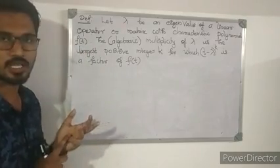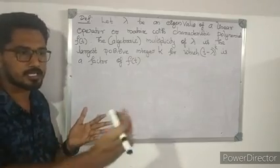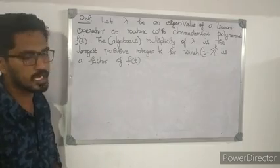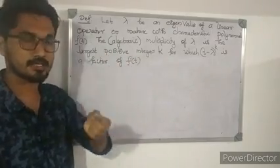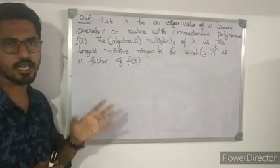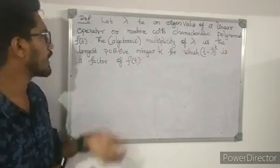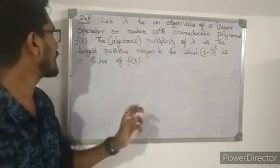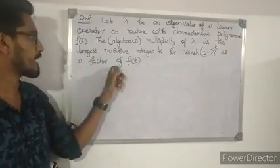I have a characteristic polynomial f of t. If I have a linear transformation, I have an eigenvalue lambda. This is the algebraic multiplicity of lambda. The algebraic multiplicity is the largest positive integer k for which t minus lambda raised to k is a factor of f of t.